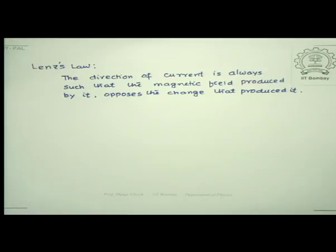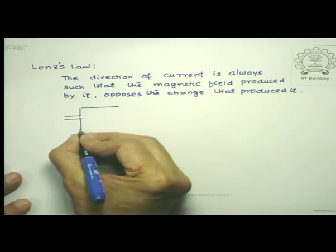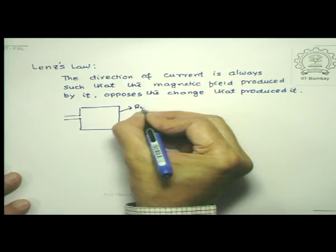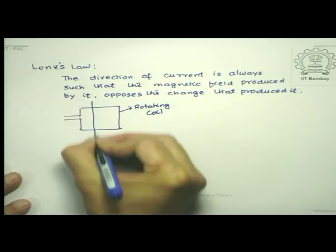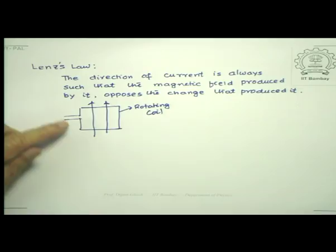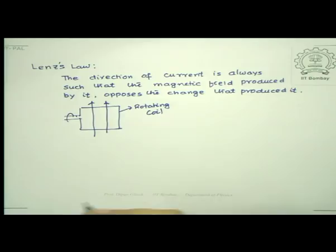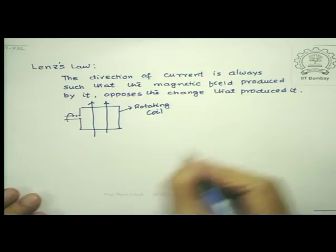Let us push this idea a little further. Supposing we have a rotating coil in a uniform magnetic field — I will just give you a schematic diagram. So I have a coil which is rotating in a constant magnetic field. This is the rotating coil, and let us suppose this is the direction of the magnetic field which is uniform. The coil moves around an axle, and suppose the direction of B makes an angle theta with the perpendicular to the plane of the coil.